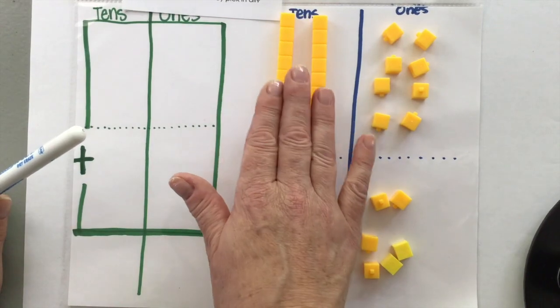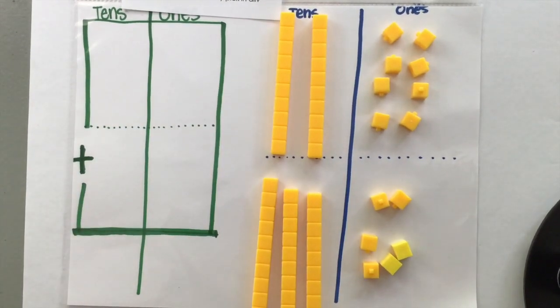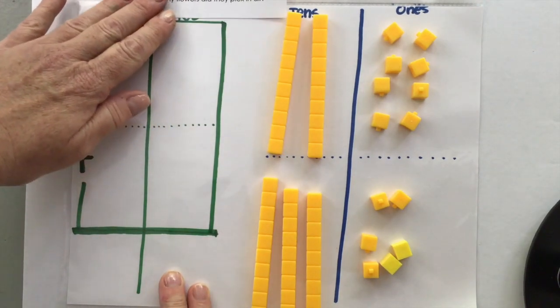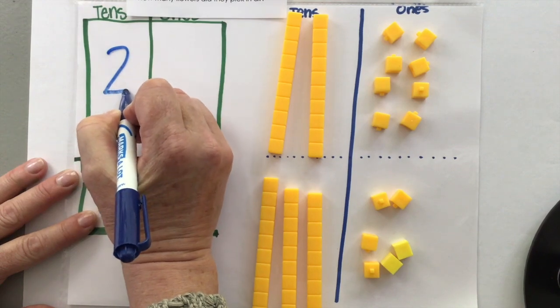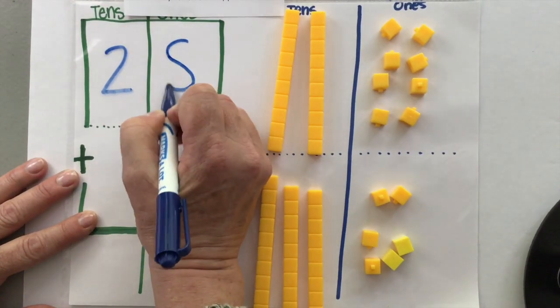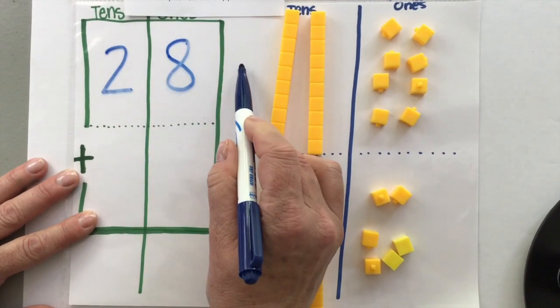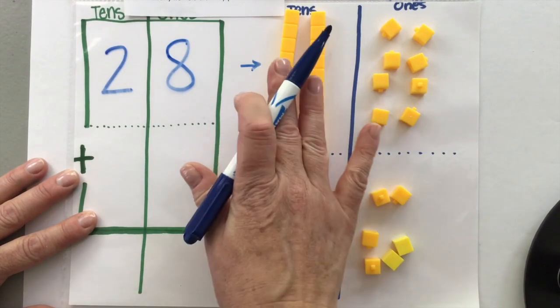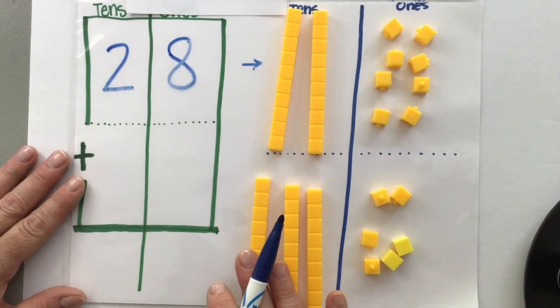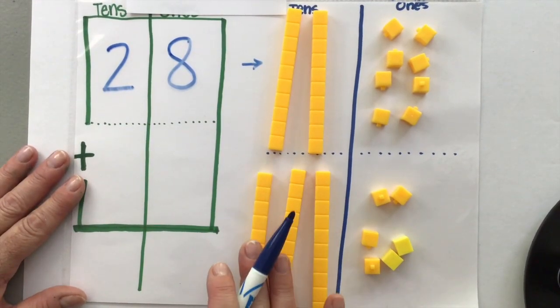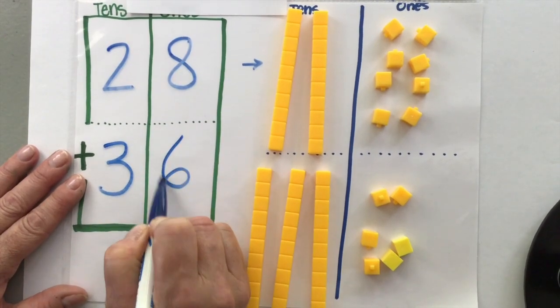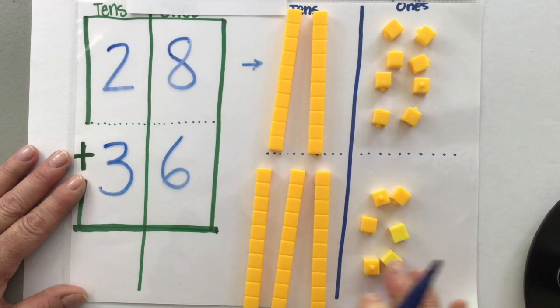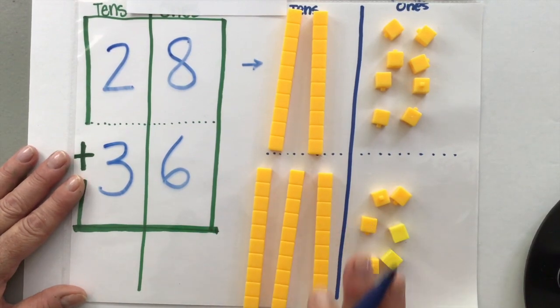We're also going to write our numbers in our other place value board that we drew. Gina picks 28, two sets of 10 and eight. And look, that's what we built right here. Two sets of 10 and eight. And Hannah picks 36 flowers. So we're going to write that number here, 36. And that's what we did. We built it. Three sets of 10 and six.